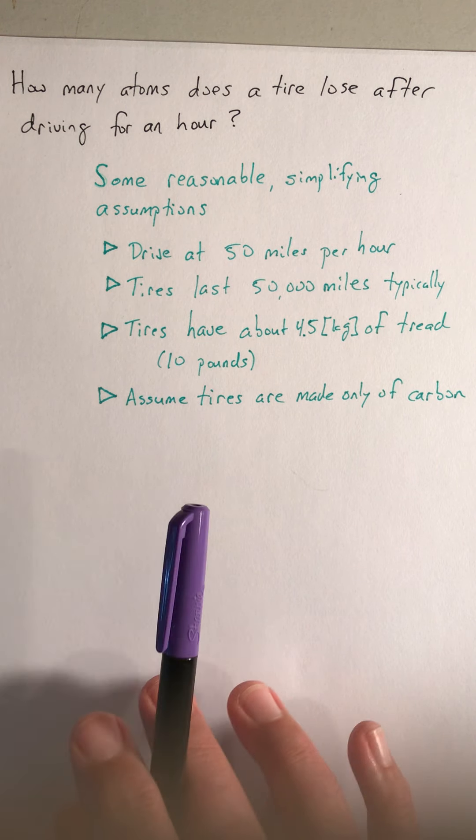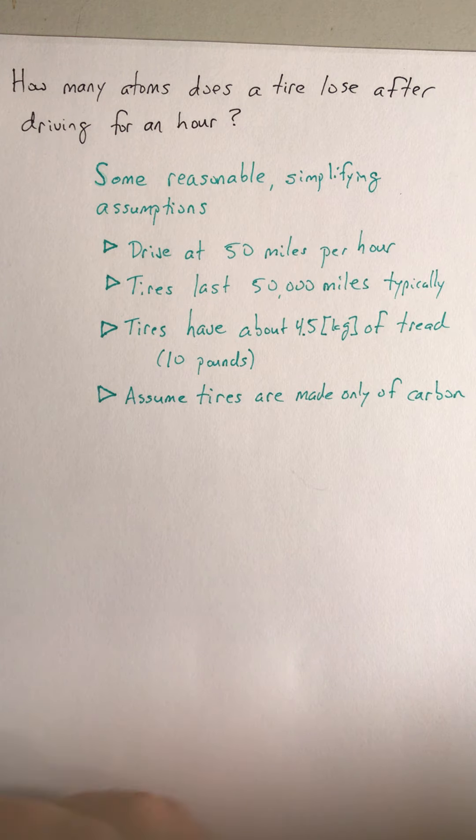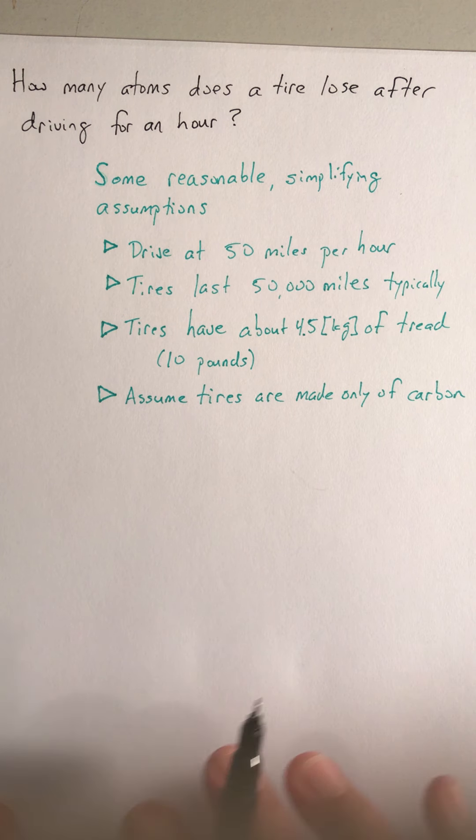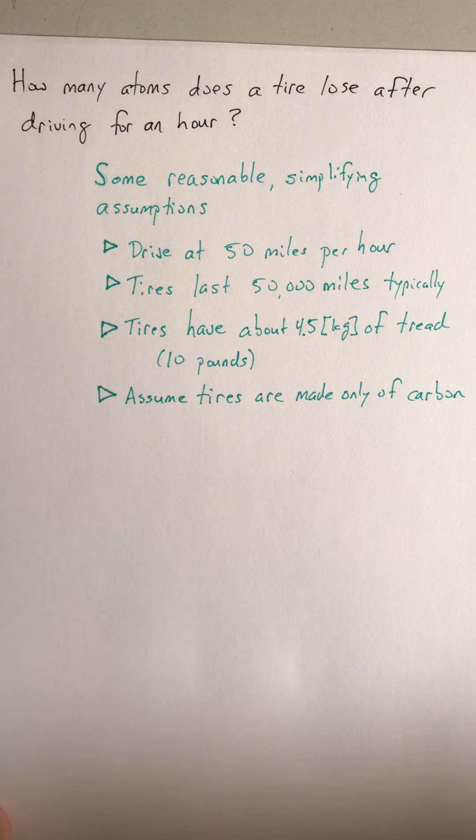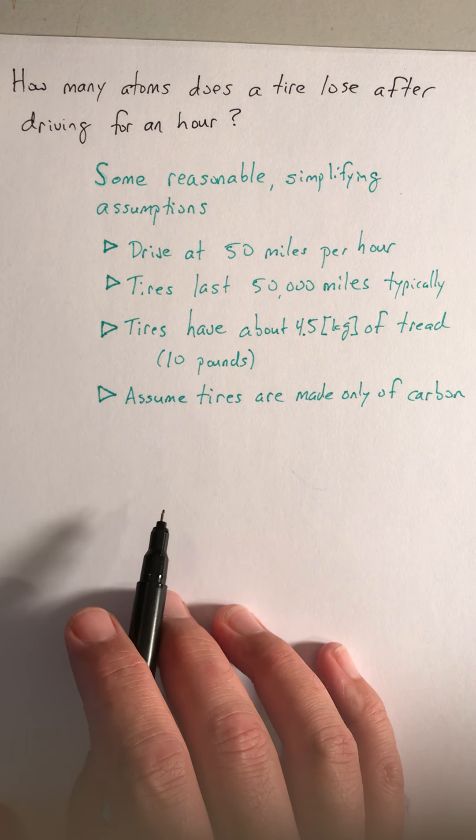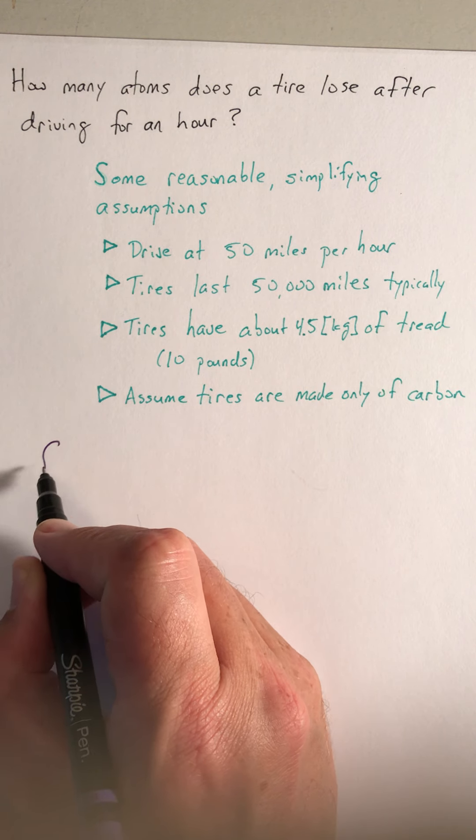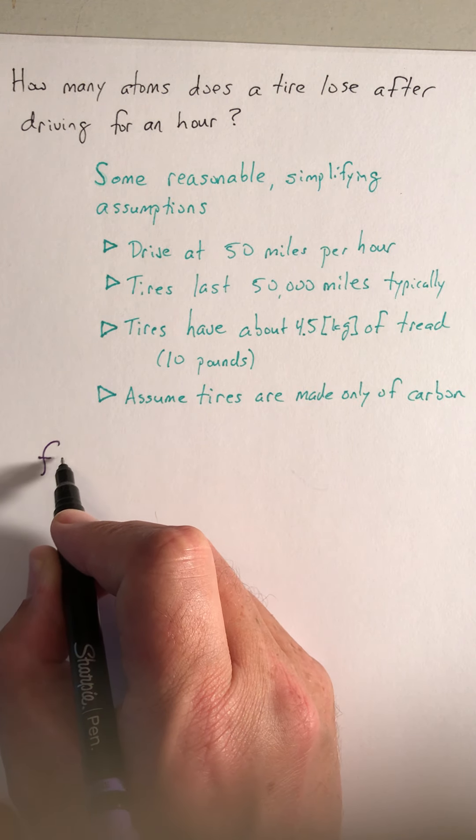In solving this, the way I chose to do it is we're going to look at driving for an hour. That reflects what fraction of the lifetime of a car's tire, so we'll call that fraction f.